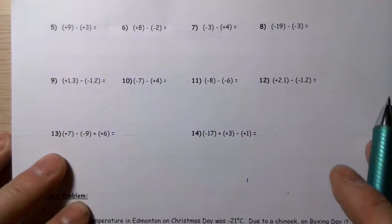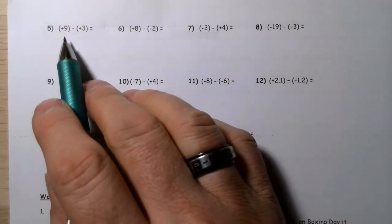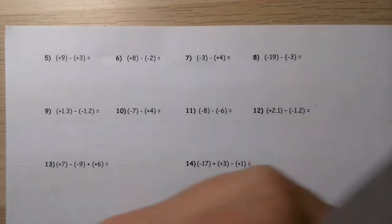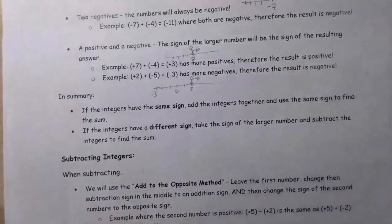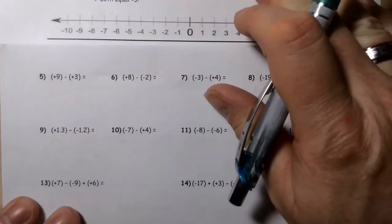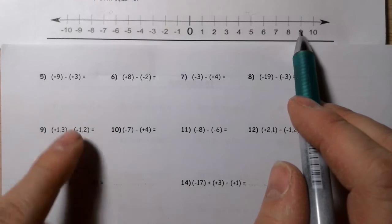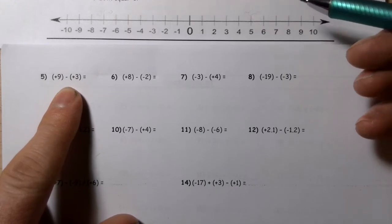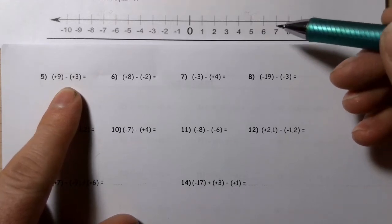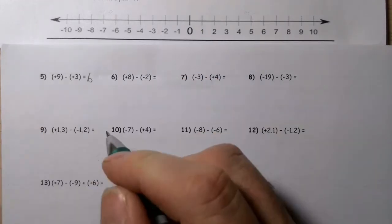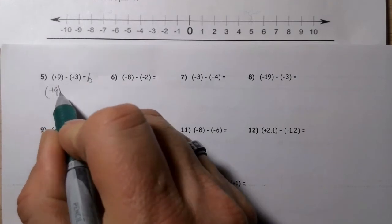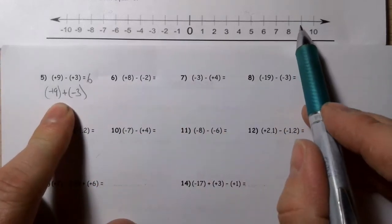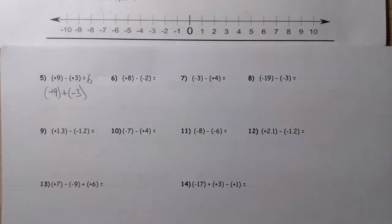Nine minus positive three: I'm starting at positive nine, subtracting — meaning I'm facing to the left — positive three, so I take three forward steps — one, two, three — which gets me to six. The other way to think about it is positive nine plus negative three: starting at nine, facing forward but taking three backward steps. Either way I get to six.